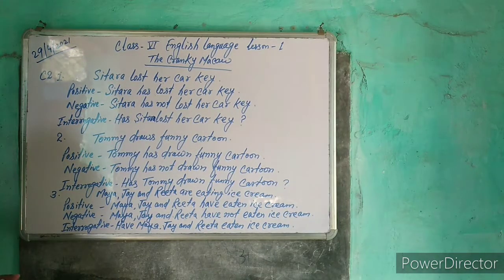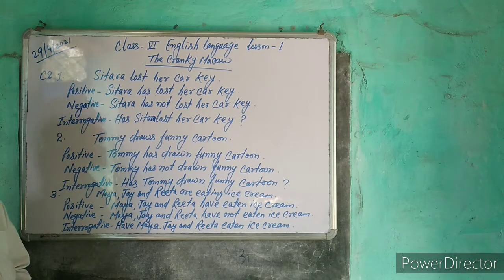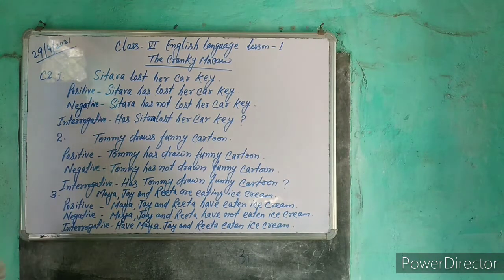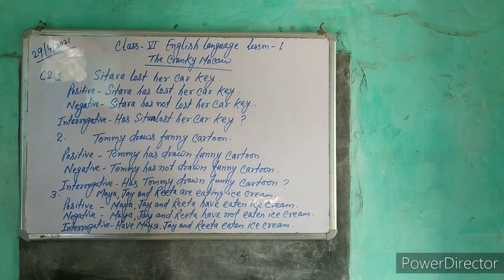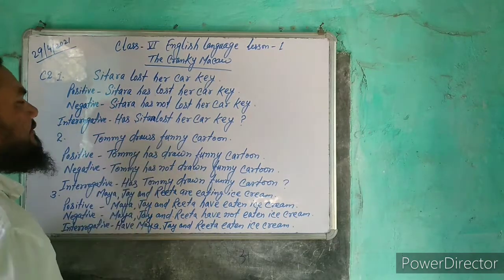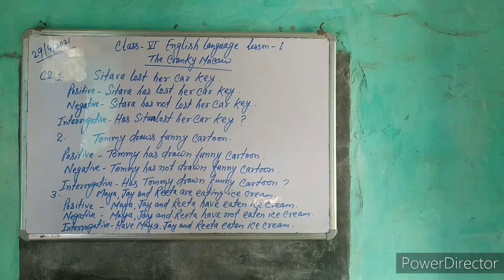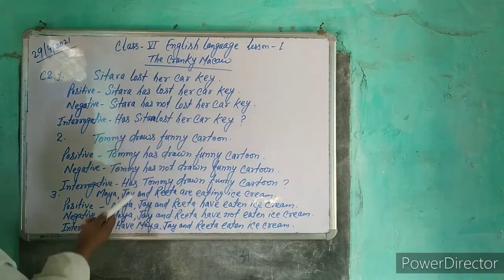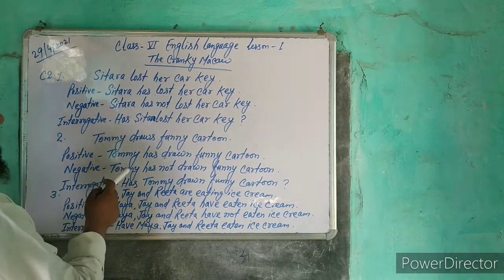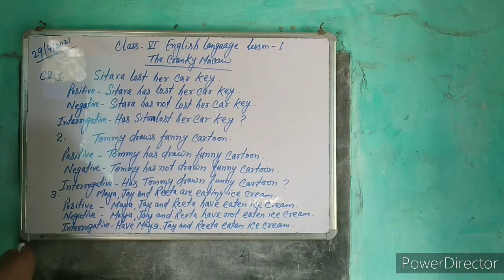The positive sentence is: 'She has lost her car key.' The negative sentence is: 'She has not lost her car key.' Now for the next sentence — 'Tommy draws funny cartoons' — the present perfect tense positive sentence is: 'Tommy has drawn funny cartoons.' The negative sentence is: 'Tommy has not drawn funny cartoons.'